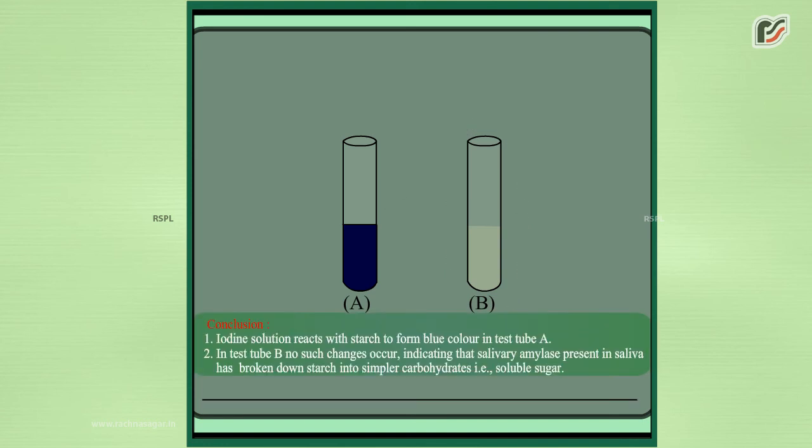Conclusion: Iodine solution reacts with starch to form blue colour in test tube A. In test tube B no such changes occur, indicating that salivary amylase present in saliva has broken down starch into simpler carbohydrates,